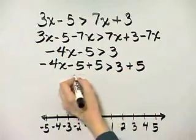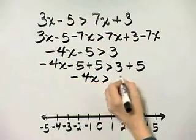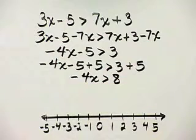Notice on the left side, that simplifies to negative 4x greater than 3 plus 5 or 8. How do we finish solving?